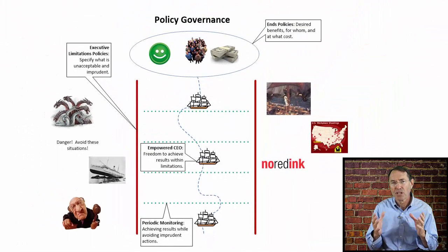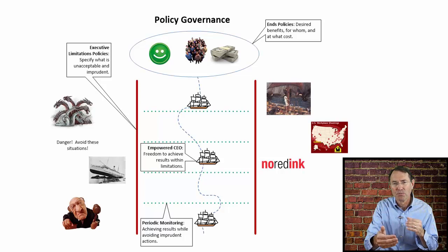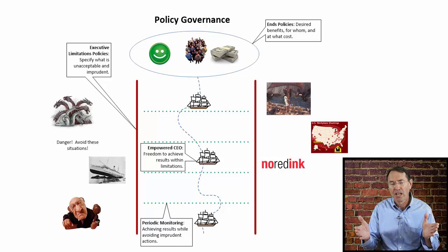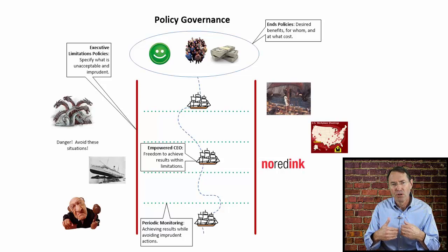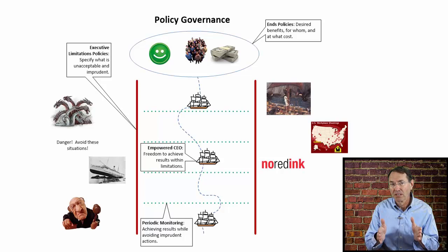So it really comes down to a fairly simple system, conceptually, where you establish what's to be achieved, you establish what is unacceptable in terms of action, and then you monitor the results and compliance with those policies. The CEO ends up empowered and the board is carrying out its responsibility to the owners to get results in an acceptable way.